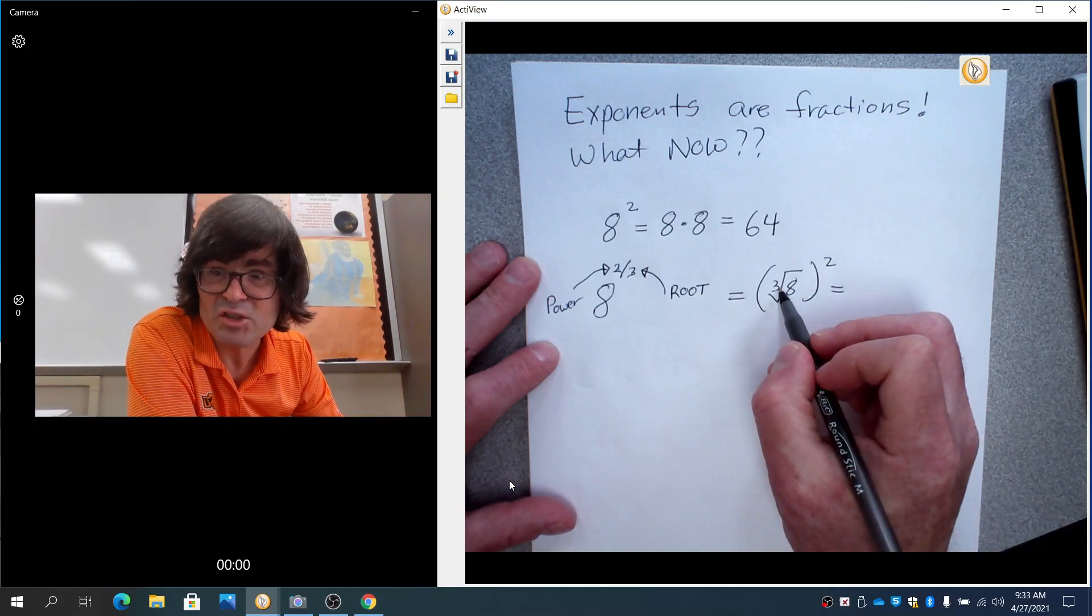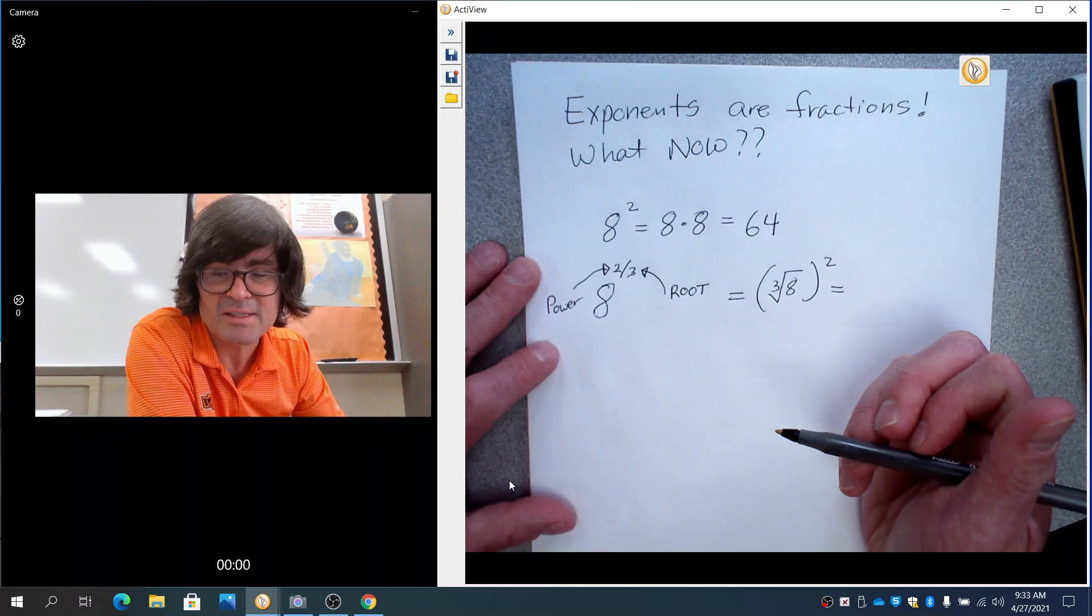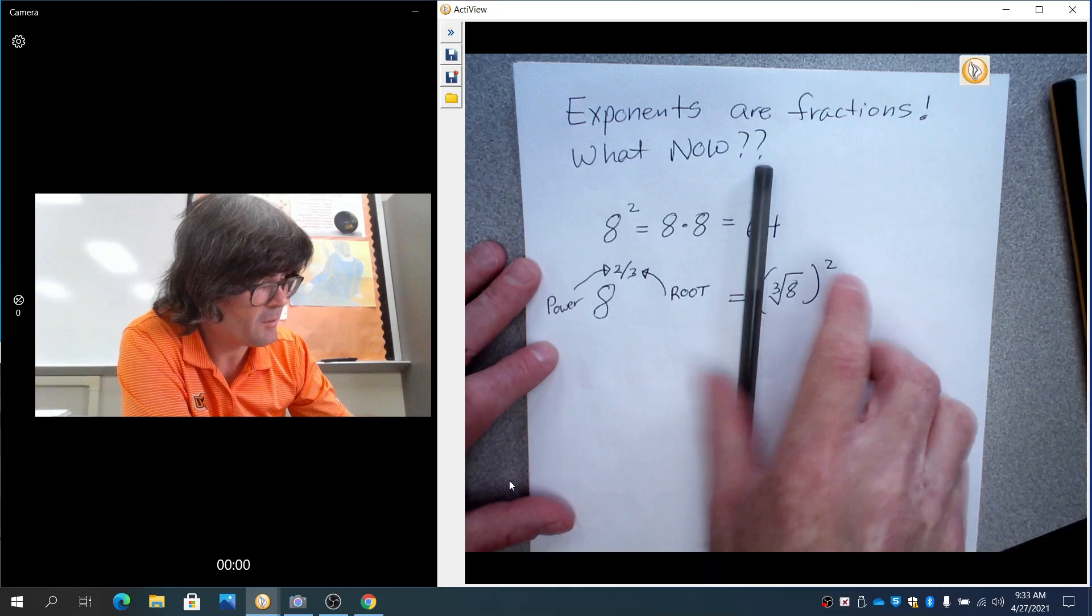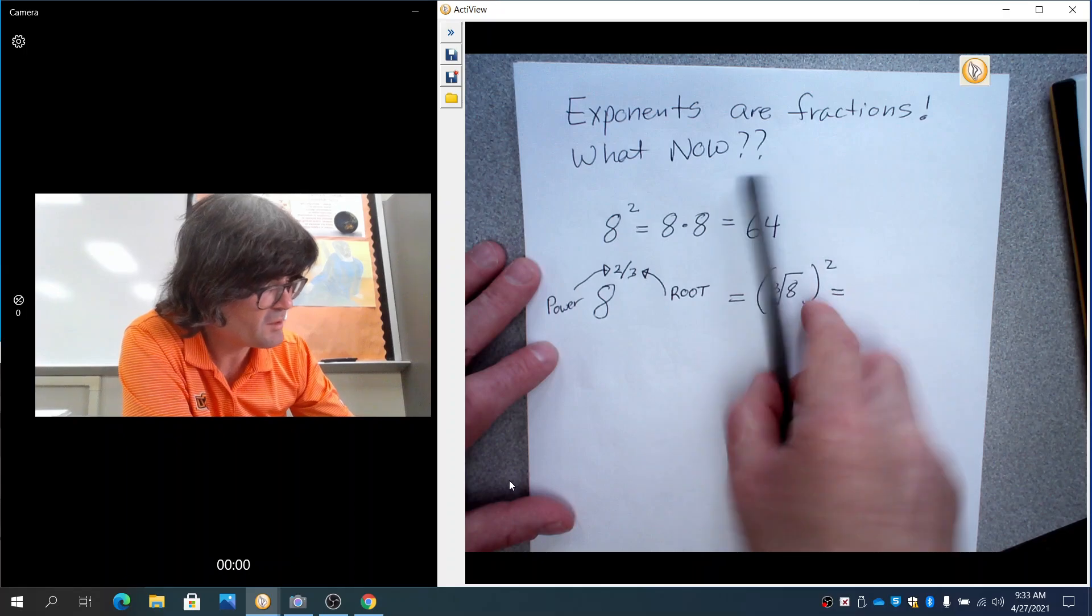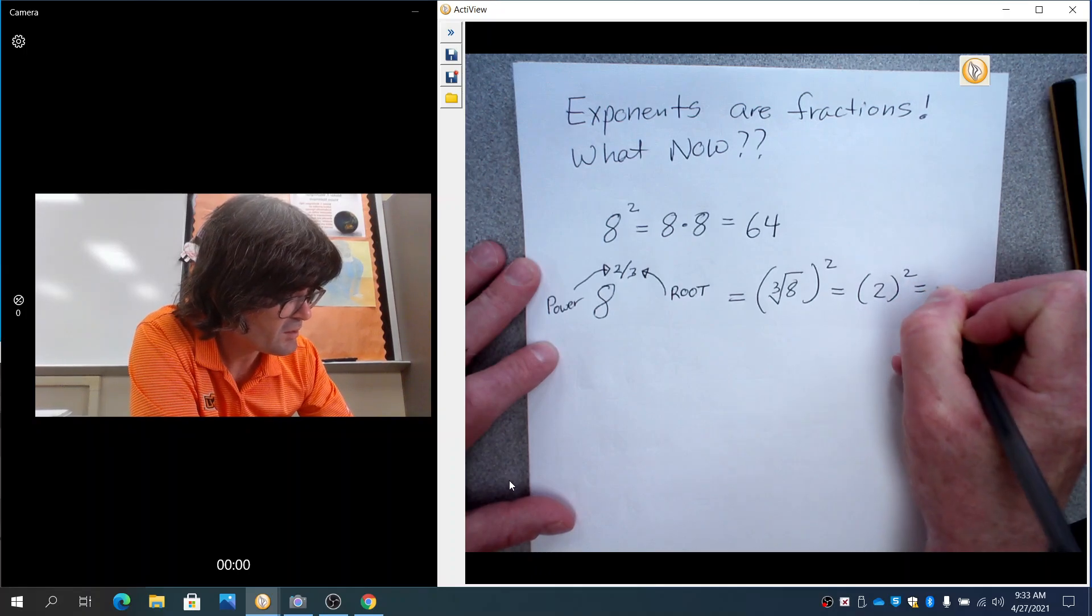The cube root of 8 is 2 because a cube root is a question: What number times itself 3 times makes 8? And it's going to be 2 times 2 is 4, and that times 2 is 8. So this is going to be 2 squared, and that is 4.